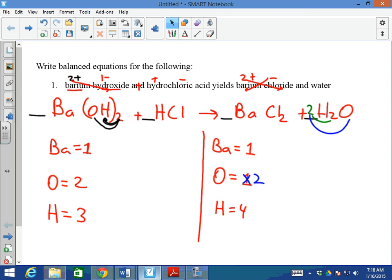Right now, I can see that H is not balanced. Let's balance it out. If I add a 2 here, that would give me 2 times 1, which is 2, and on this side I have 2 already, which is 4. Right now, hydrogen is balanced. I have 4 on each side.